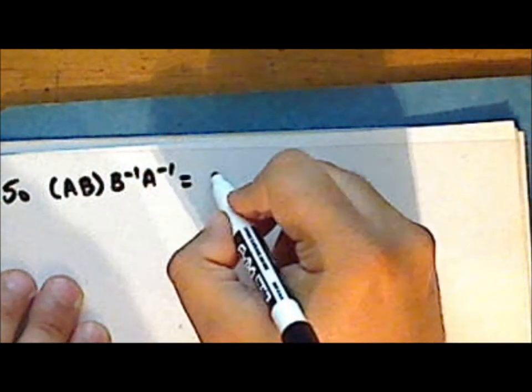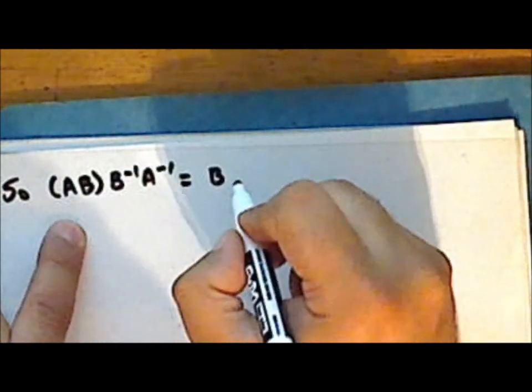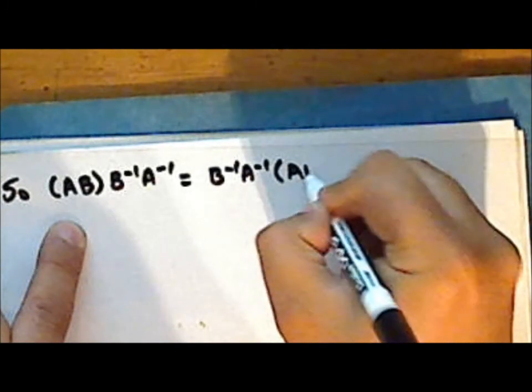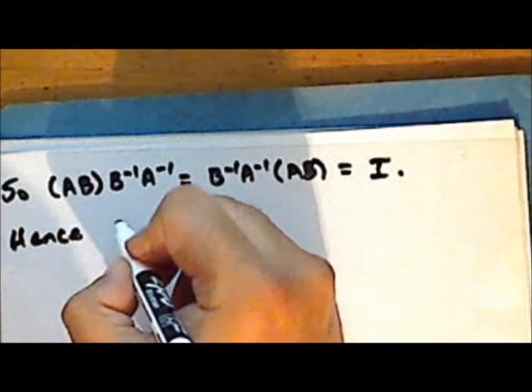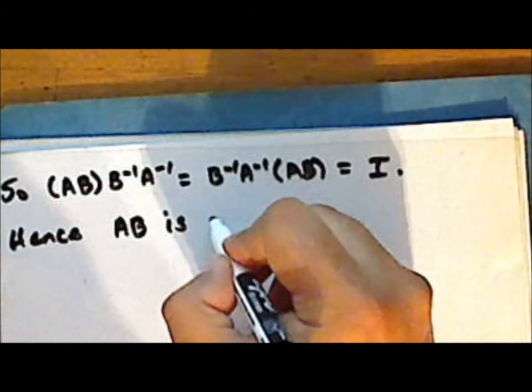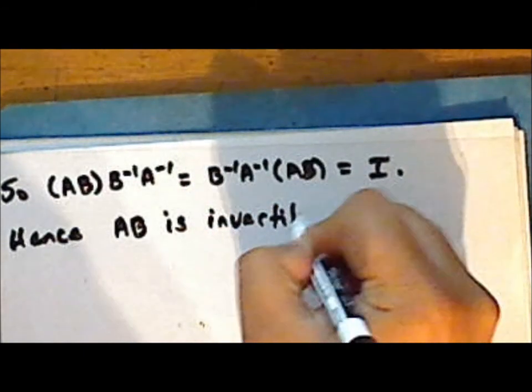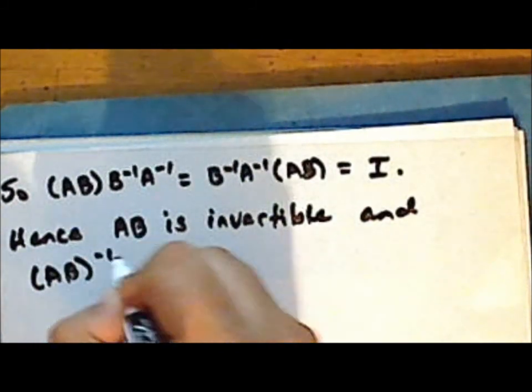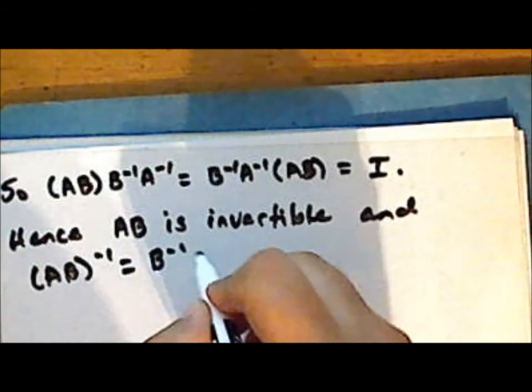Now we multiply on the left by B inverse A inverse times AB. We group the terms in the center: B inverse times A inverse times A times B. The quantity A inverse times A is the identity, leaving B inverse times B, which is again the identity matrix. So the product AB times B inverse A inverse equals B inverse A inverse times AB equals the identity, meaning AB is invertible and its inverse is B inverse A inverse.